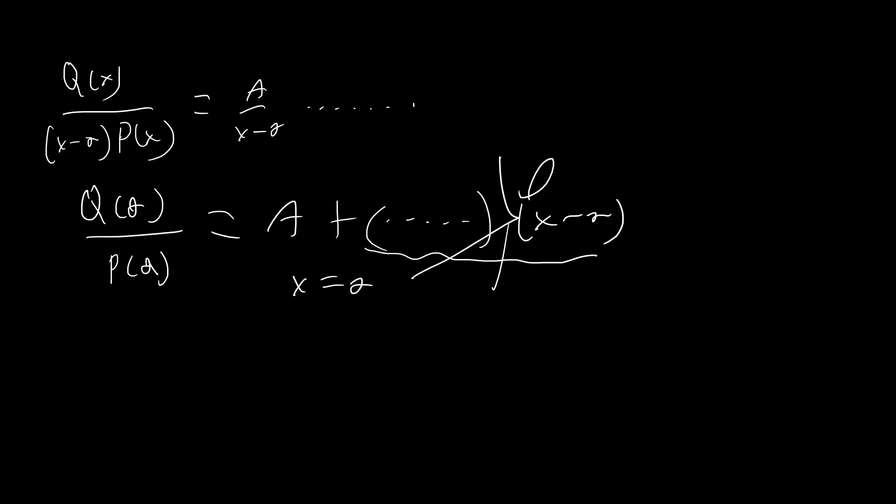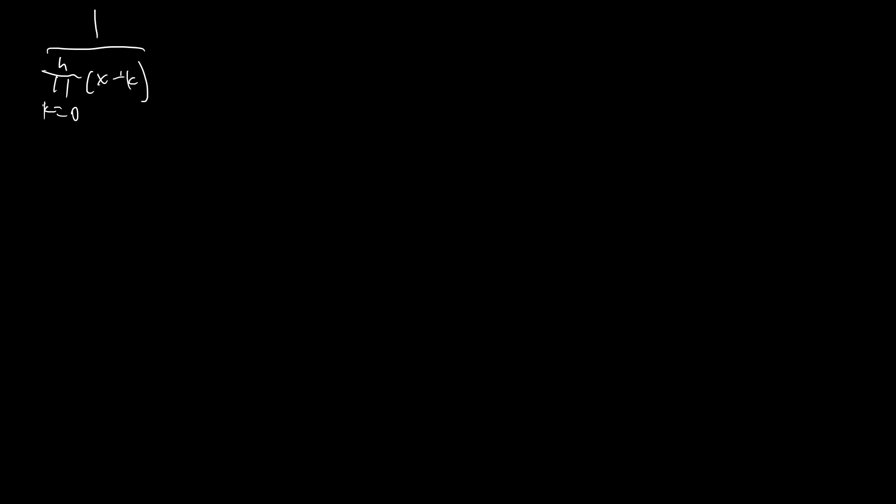Let's go ahead and apply this to our integral. We're going to do the partial fraction decomposition of the whole product, which I'll write using pi notation: the product from k equals 0 to n of (x plus k). As you can see, if we set n equal to 2 we get x times (x+1) times (x+2), and so on. This equals the sum from k equals 0 to n of A_k over (x plus k), splitting up all the different factors. Now we just have to calculate A_k.